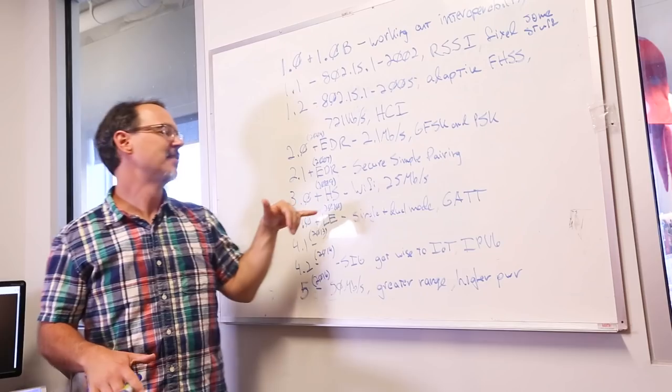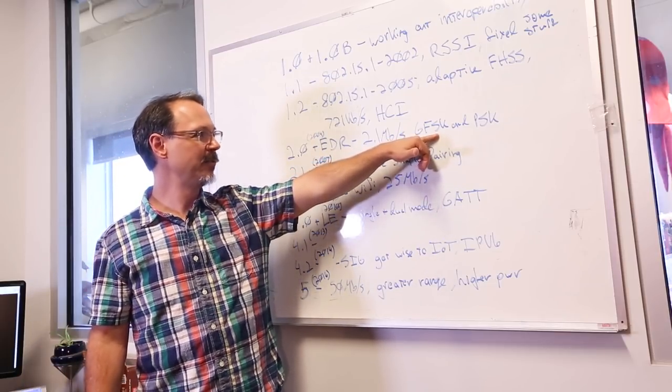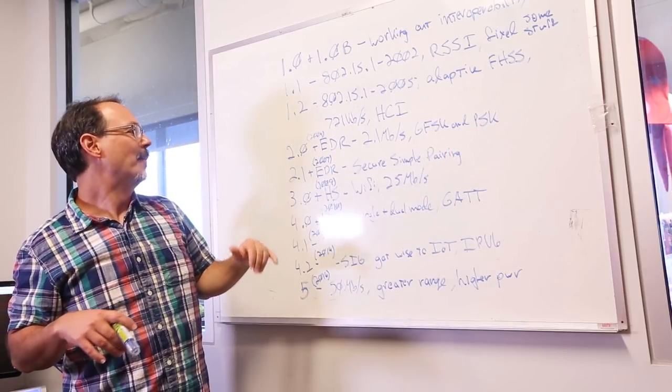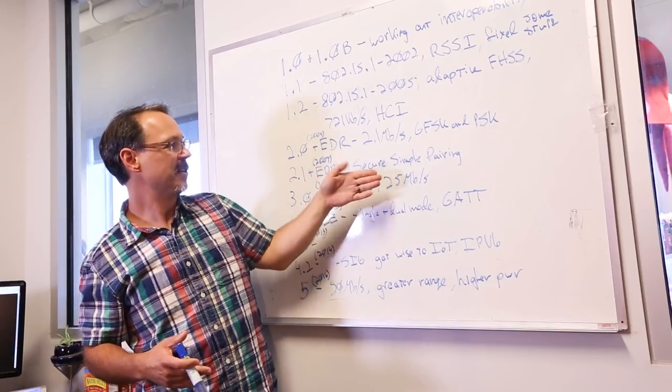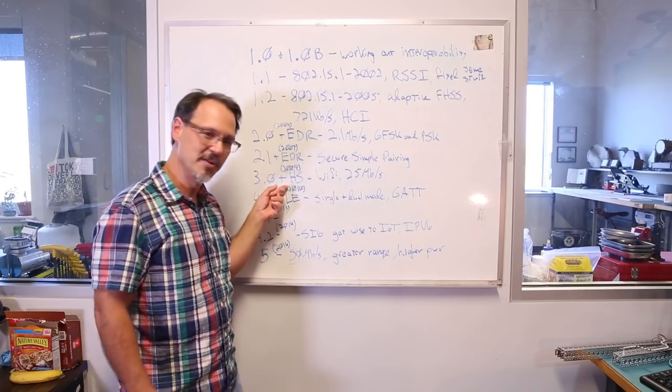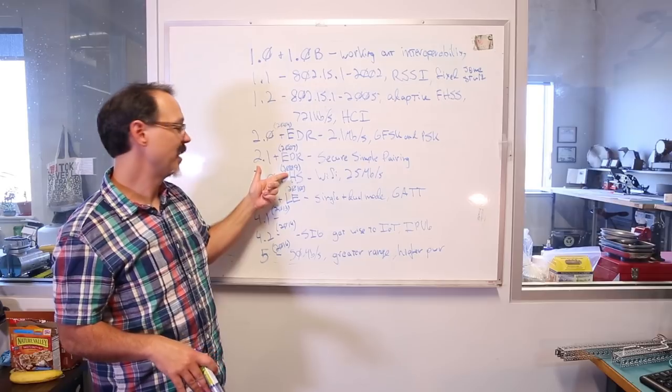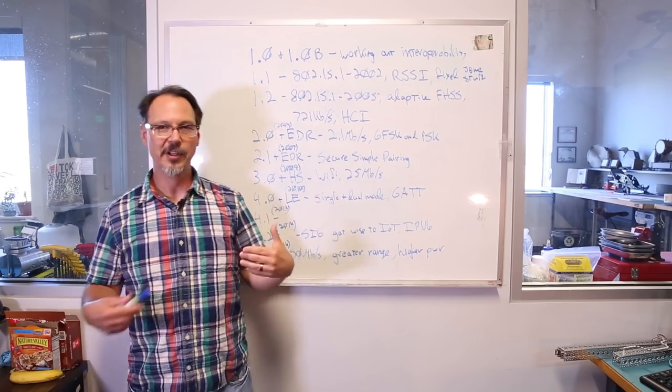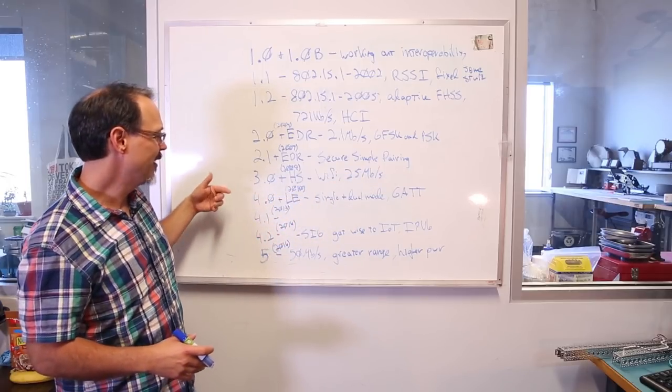We have 1.0 and 1.0b, where they're working out the interoperability. 1.1, which ended up being 802.15.1-2002, back when IEEE was still managing the spec, where they implemented RSSI and they fixed a bunch of stuff. 1.2 was 802.15.1-2005, and that's the last entry I have for IEEE. After that, the Special Interest Group took over. They adopted adaptive frequency hopping spread spectrum. They could get up to 721 kilobits per second, not bytes. Implemented a host controller interface.